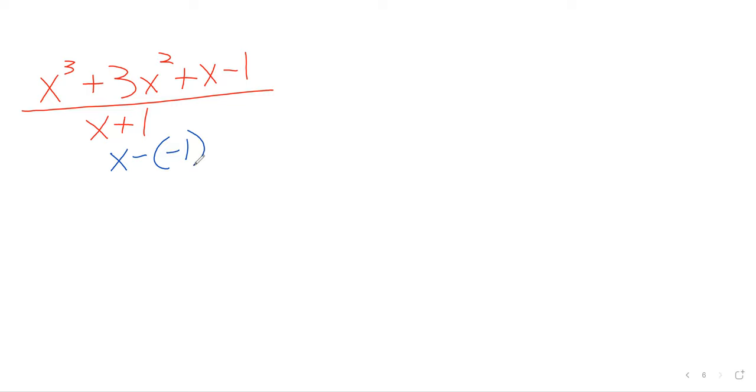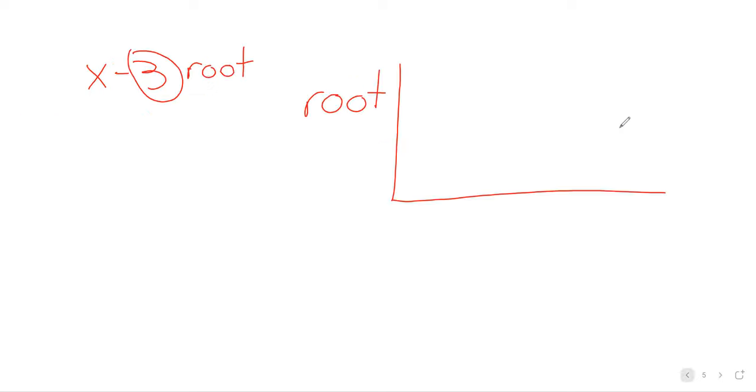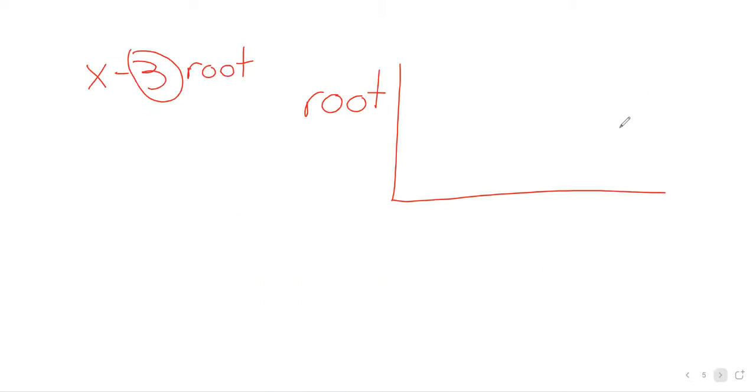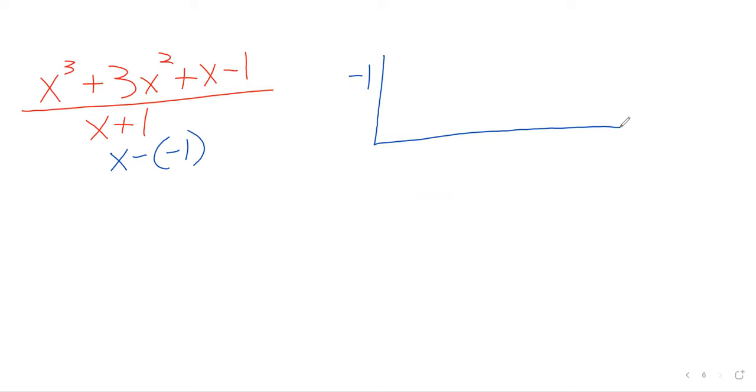And then once you have that subtraction, we can approach this in the same way that we approached this problem here. The number we're subtracting goes in front of the bar, up here go the coefficients, including as you observed any negative signs. And then we do the synthetic division.